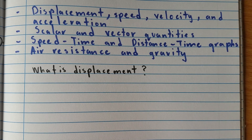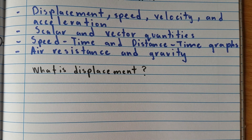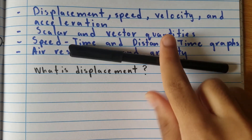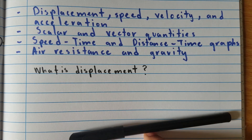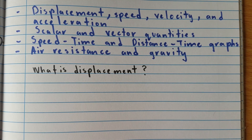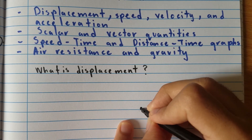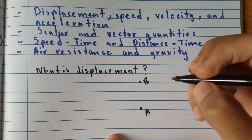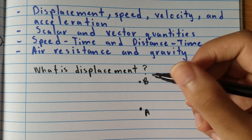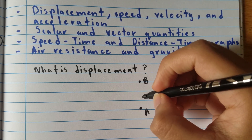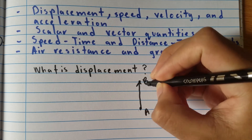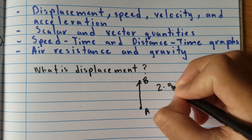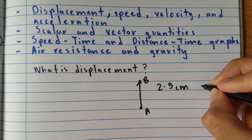So what is displacement? Well, displacement just means to displace an object. Say if I have this marker over here and I move it northbound, I've displaced it from this point to this point. I can denote this motion by writing it from point A, where the marker was located, and then I've displaced it to point B. If we measure this, it's about 2.5 centimeters, so we moved it 2.5 centimeters to the north.